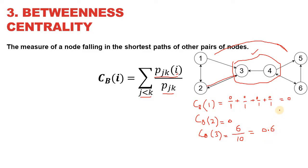Similarly, node 4 is also going to have a betweenness centrality value of 0.6, while nodes 5 and 6 will have a betweenness centrality value of 0. This is how we calculate the betweenness centrality value for any given node when the graph is undirected.